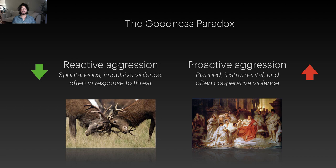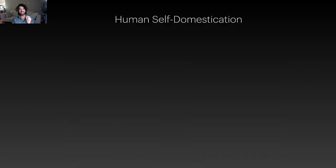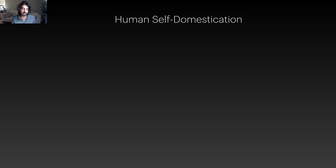So why has reactive aggression decreased while proactive aggression increased? Wrangham argues this is part of the same process. Before getting to that, let's take a detour to talk about human self-domestication. We touched on this in the homosexuality lecture as one potential explanation for why homosexual behavior would evolve or be maintained in humans. We also talked about how humans underwent a massive expansion in cranial capacity in the last two million years, peaking about 100,000 years ago — but that doesn't mean we didn't see other evolutionary changes in our skulls or psychology.